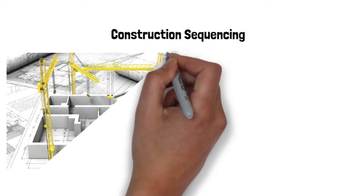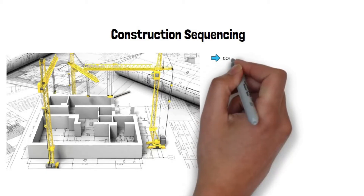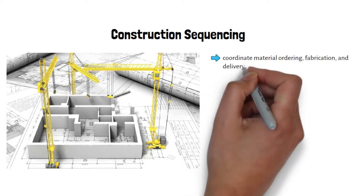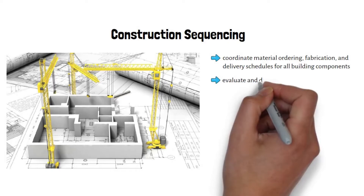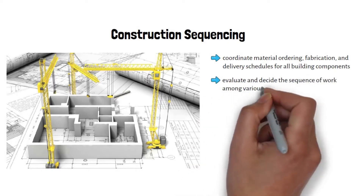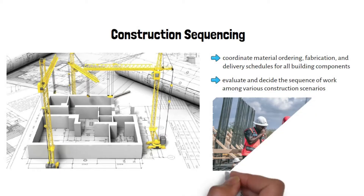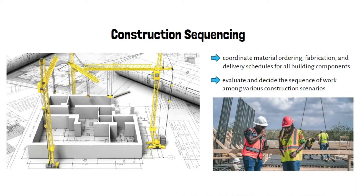Construction Sequencing: Building a structure involves different types of resources, and a lot of time and effort is spent for this purpose. A building information model can be effectively used to coordinate material ordering, fabrication, and delivery schedules for all building components. It gives the opportunity to evaluate and decide the sequence of work among various construction scenarios. BIM simulations also help field teams understand the sequence of works and work accordingly.